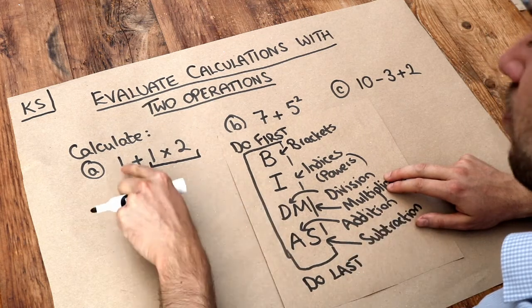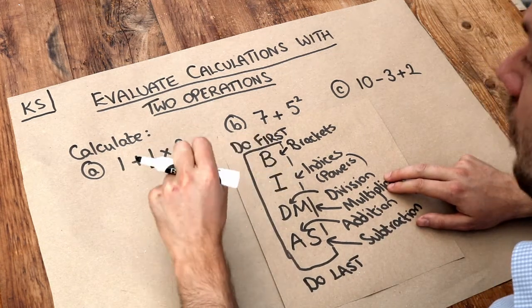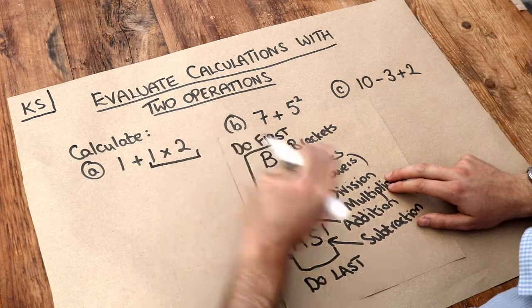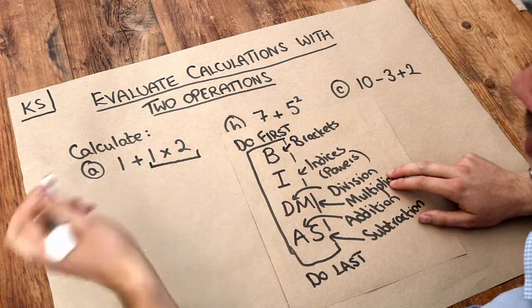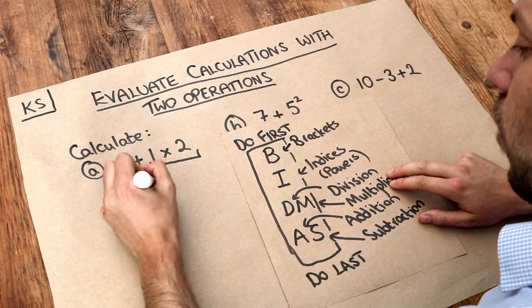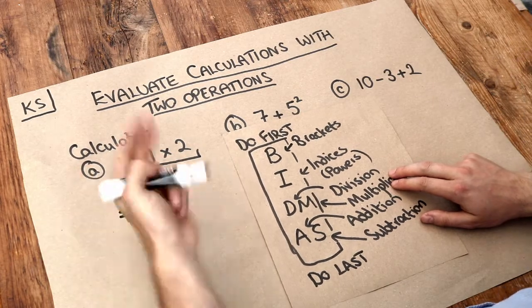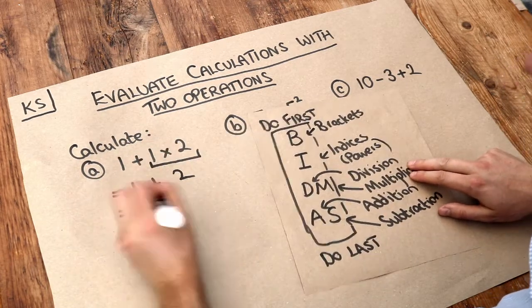So we can read this as 1 plus 1 times 2, rather than 1 plus 1 times 2. So what is 1 times 2? Well, it's just 2. So that's just equal to 1 plus 2. And now we've just got addition left. So that's 1 plus 2, which is obviously 3.